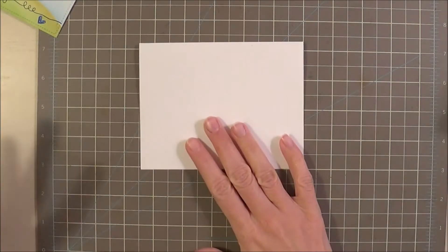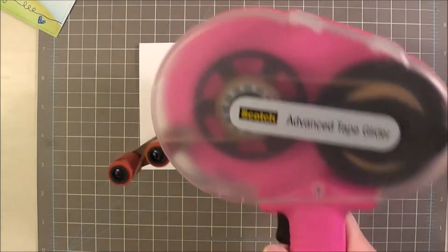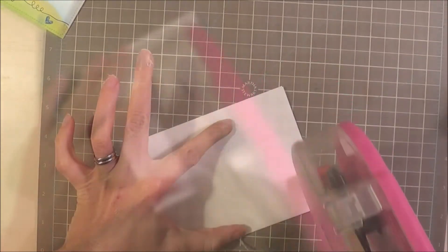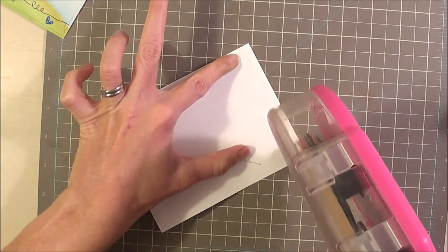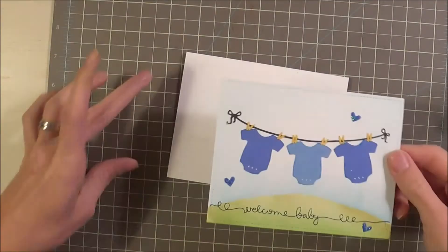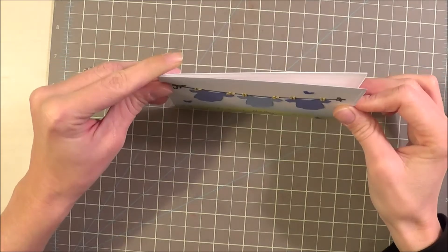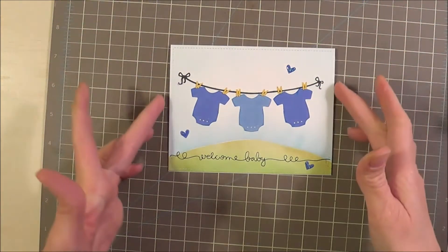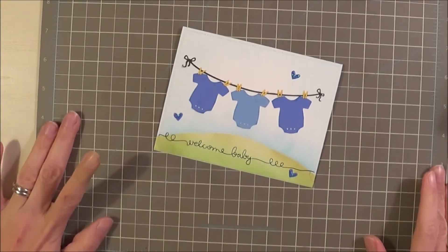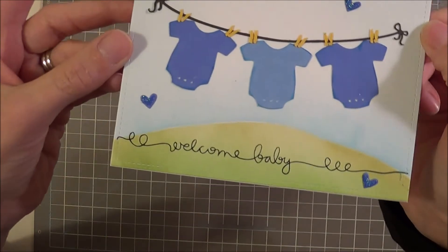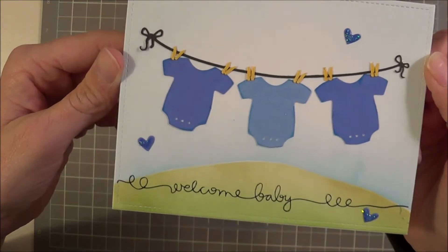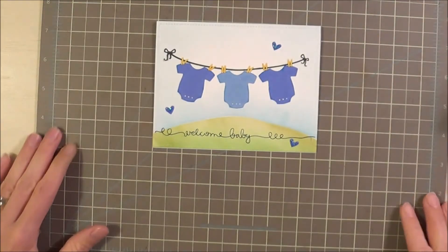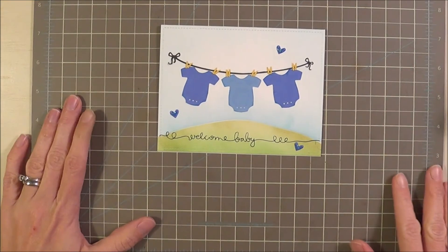Now I'm going to adhere it to the card front. I'm going to pull out my ATG gun and I'm just going to apply a ton of glue. And I'll give it a good solid push down once everything is dry. But that is it. That is my Masculine Monday card welcome baby for this week. I love how it turned out and I hope that you have enjoyed watching this video. I hope you have a great day and thanks for watching.